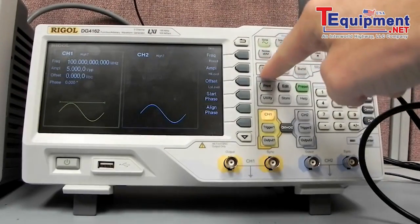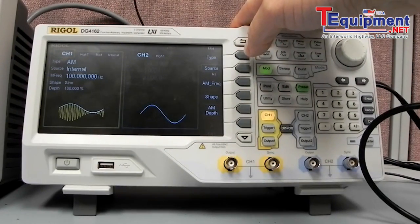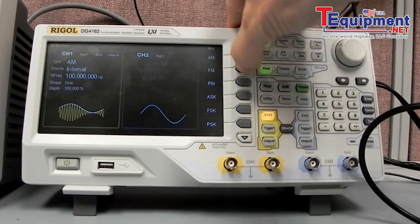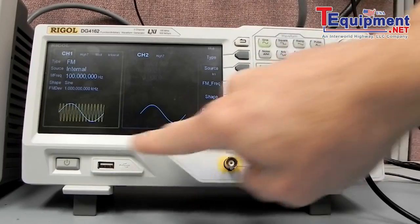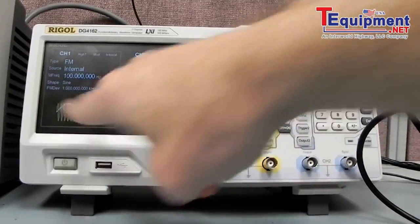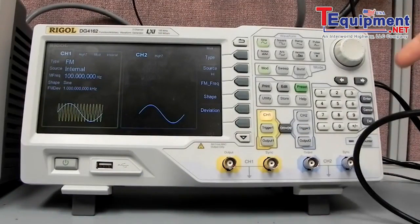Now we're going to enable modulation, and with the DG4000 series we have a number of modulation styles that we can work with. I'm going to select type, FM modulation, and as you may recall from FM modulation or radio transmission, the frequency is going to modulate by the audio input that we have.